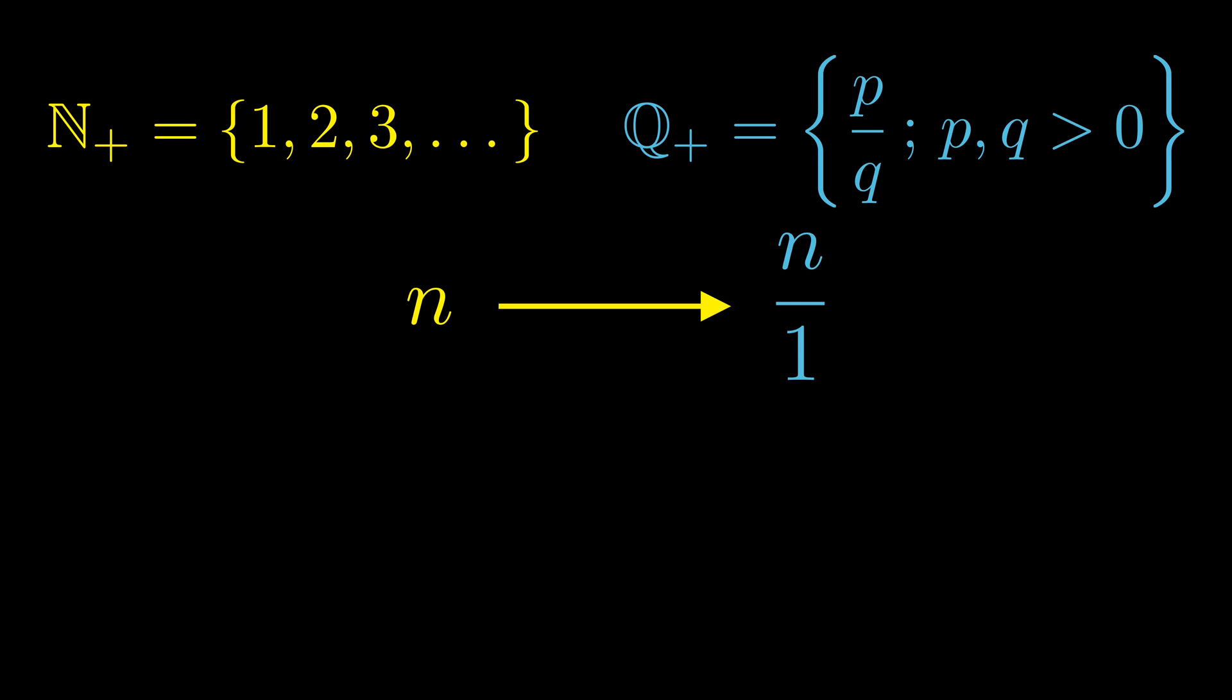Getting an injective map going the other way is a bit trickier, but we can rely on prime numbers to get the job done. Let's send p over q to the number 2 to the p times 3 to the q. Because 2 and 3 don't share any factors, different values of p and q will always result in different numbers. And since the numerator and denominator are always positive, we'll also get a positive integer for 2 to the p, 3 to the q. After we have these two injective functions, Cantor-Bernstein-Schroeder lets us automatically conclude that these two infinite sets are the same size, even though we never wrote out an explicit bijection between them.